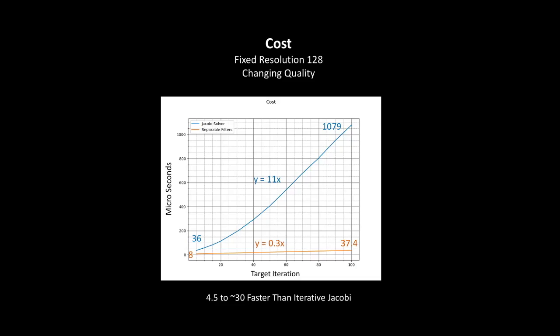As for the cost, the separable filters scale much better with higher iterations than the Jacobi solver. For example, for 100 iterations, Jacobi solver takes more than 1000 microseconds, while our filters take about 35 microseconds.